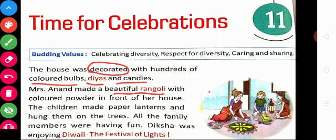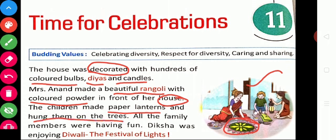How do we make rangoli? In this picture, you can see rangoli made with colored powder in front of our houses. We make beautiful rangolis in front of our house. In this picture, you can also see children making paper lanterns and hanging them on the trees. The paper lantern will be very interesting and children enjoy a lot by making this.